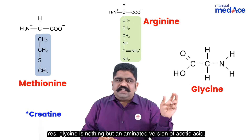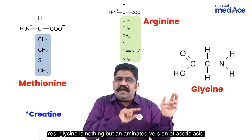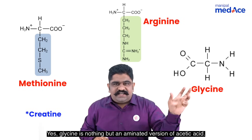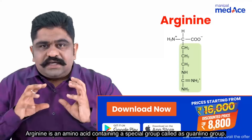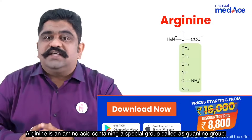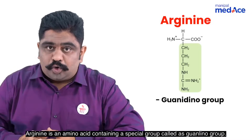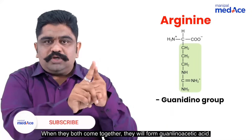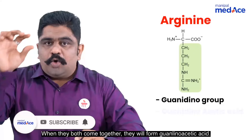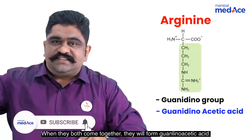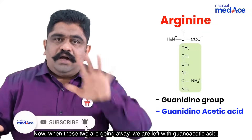Glycine is nothing but the aminated version of acetic acid. Arginine is an amino acid containing a special group called the guanidino group. When they both come together, they will form guanidinoacetic acid.